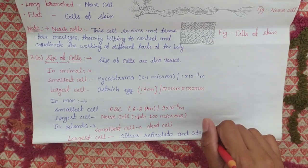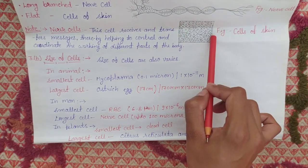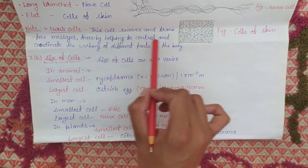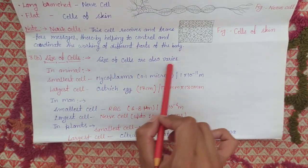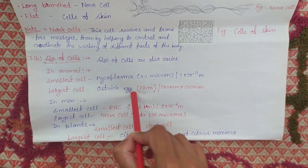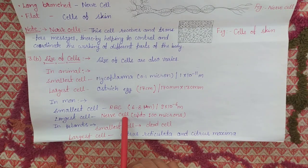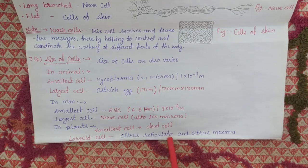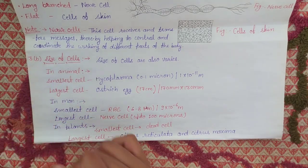I have explained all these things properly. In long branched cells there are nerve cells; in flat cells there are skin cells. Nerve cells receive and transfer messages and help to control and coordinate the different parts of the body. Regarding size: in animals, the smallest cell is mycoplasma and the largest is the ostrich egg. In humans, the smallest cell is RBC and the longest is the nerve cell. In plants, the smallest is the dead cell and the largest are Citrus sinensis and Citrus maxima. This is about the size of cells, and your third part B is completed.